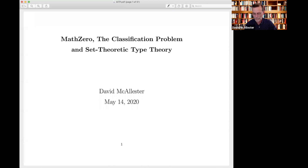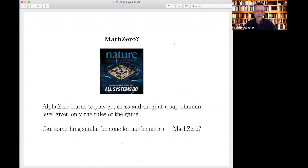So this is the question I'm going to use as a motivation. Everybody's familiar with AlphaZero — it can learn to play Go, chess, and shogi at a superhuman level given nothing but the rules of the game by self-play. Various people have asked: could the same thing be done for mathematics? Could one build someday, maybe in the next 10 years, a 'Math Zero' that learns to do mathematics at a superhuman level given nothing but the rules of the game?